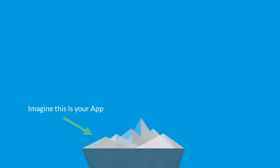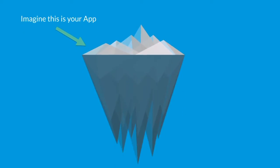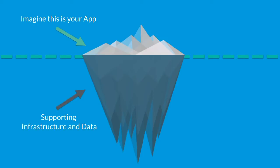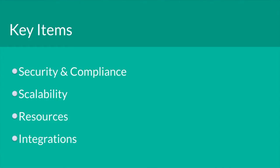To start with, let's compare building a mobile app to an iceberg. Much like an iceberg, the user experience or application interface you see is only a small piece of the work that is required. Some of the main items to consider are security and compliance, scalability, resources, and integrations.